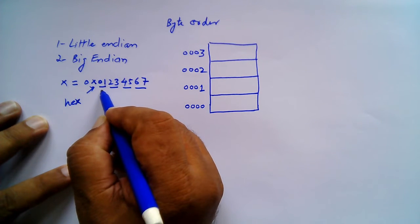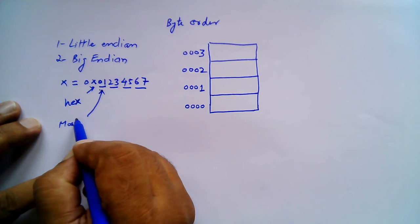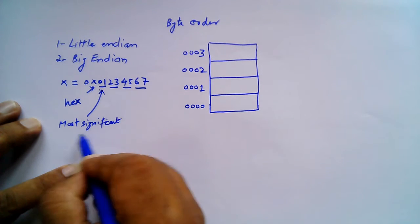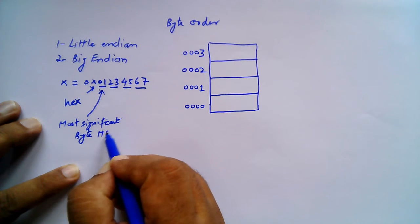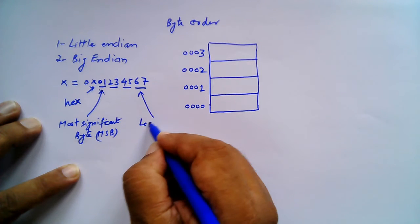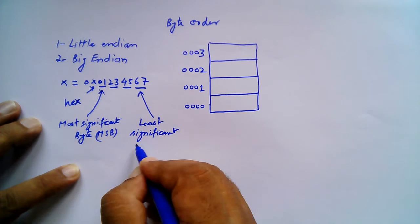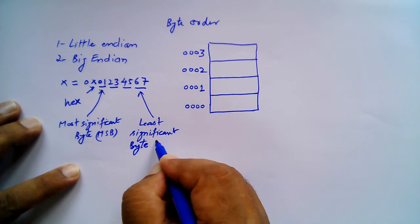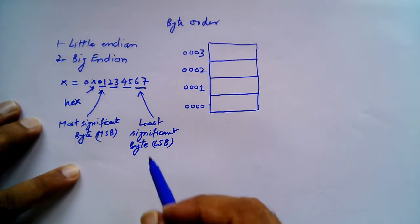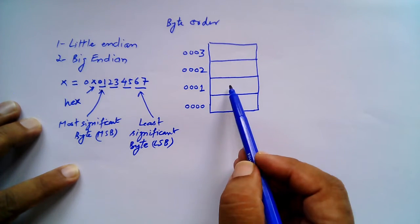We call the first part of the number the most significant byte, or MSB for short, and the last part is the least significant byte, or LSB for short. We can store the data one way: byte 01 first, then 23, then 45, then 67.